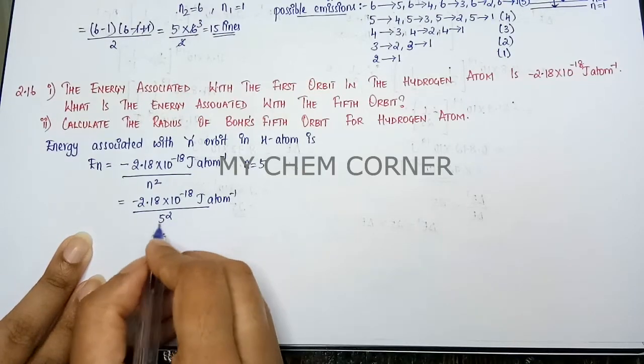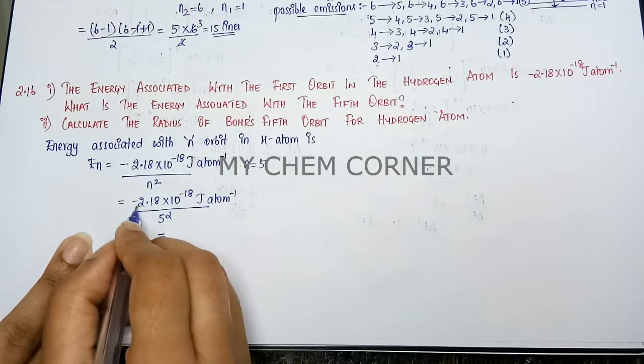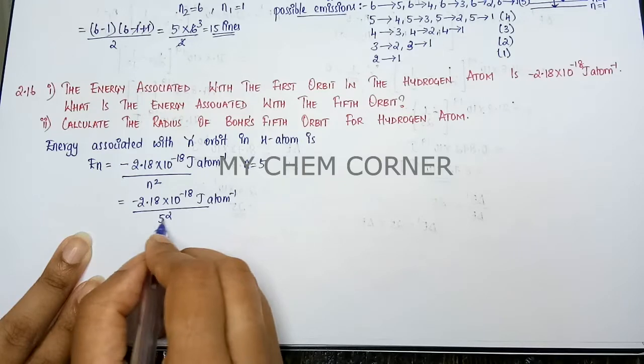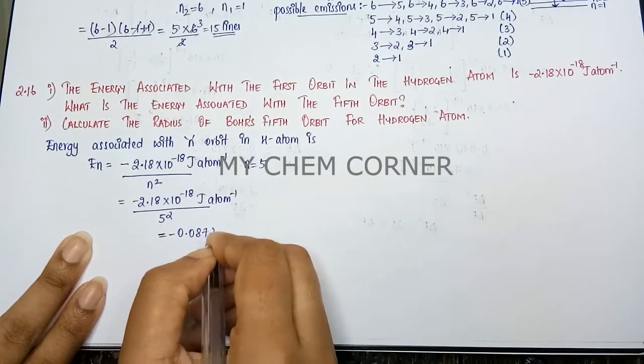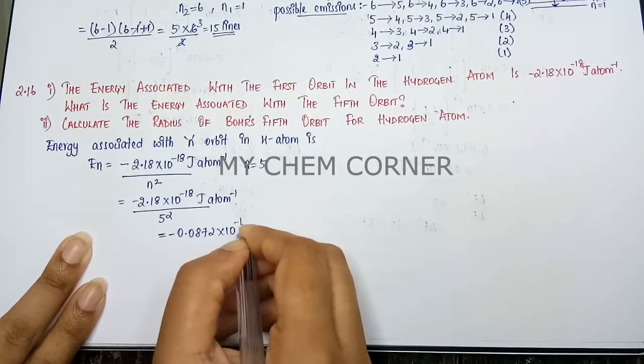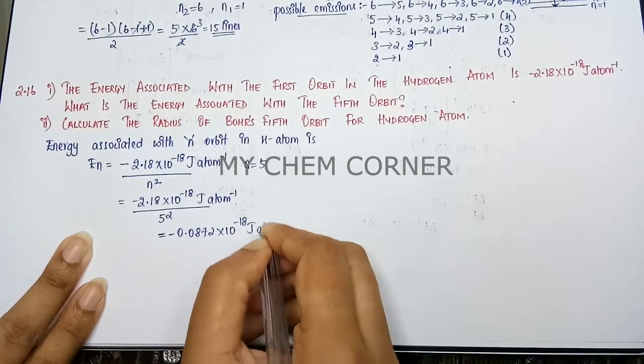When we simplify this, 5 square will become 25. So minus 2.18 divided by 25 will give minus 0.0872 times 10 to the power minus 18 joule per atom.